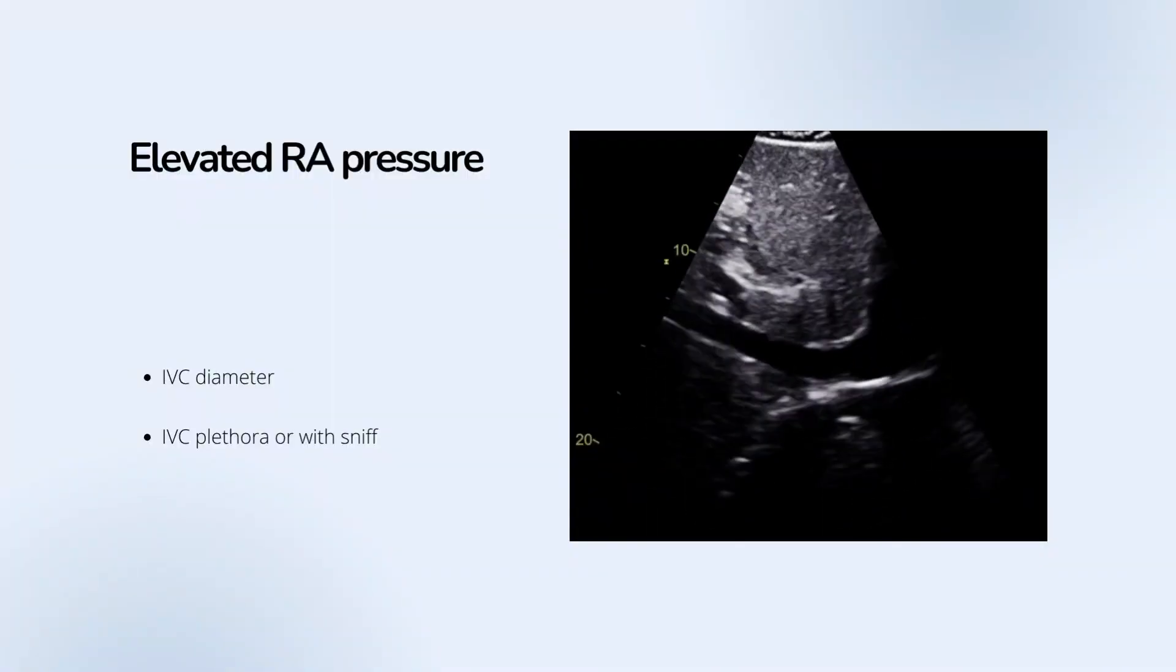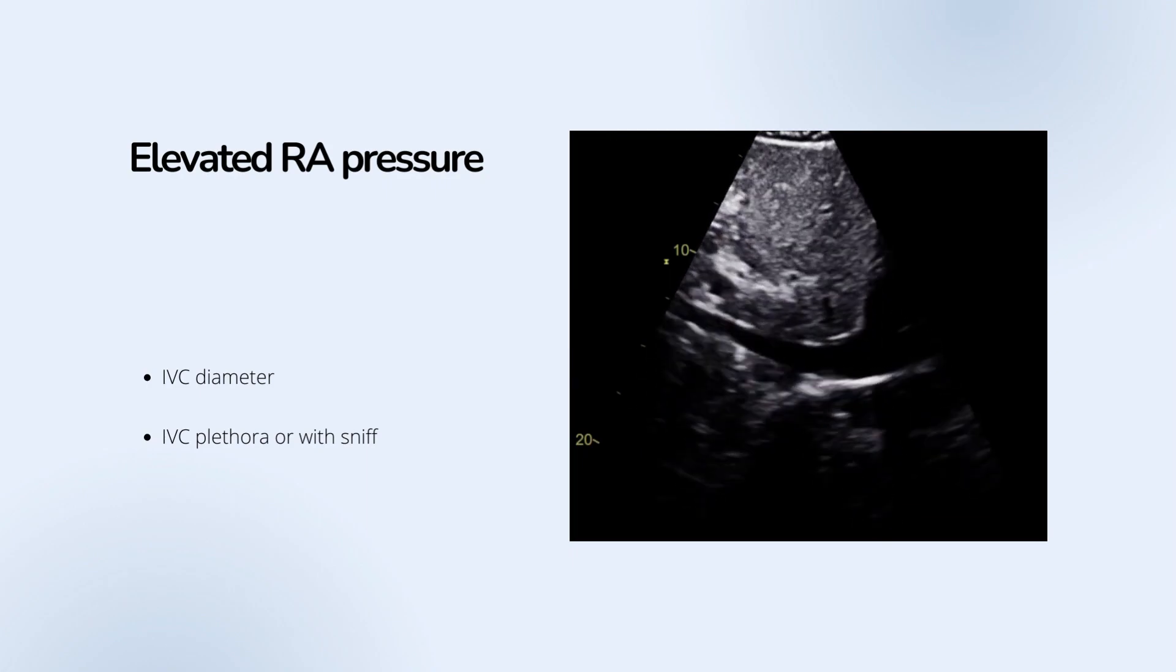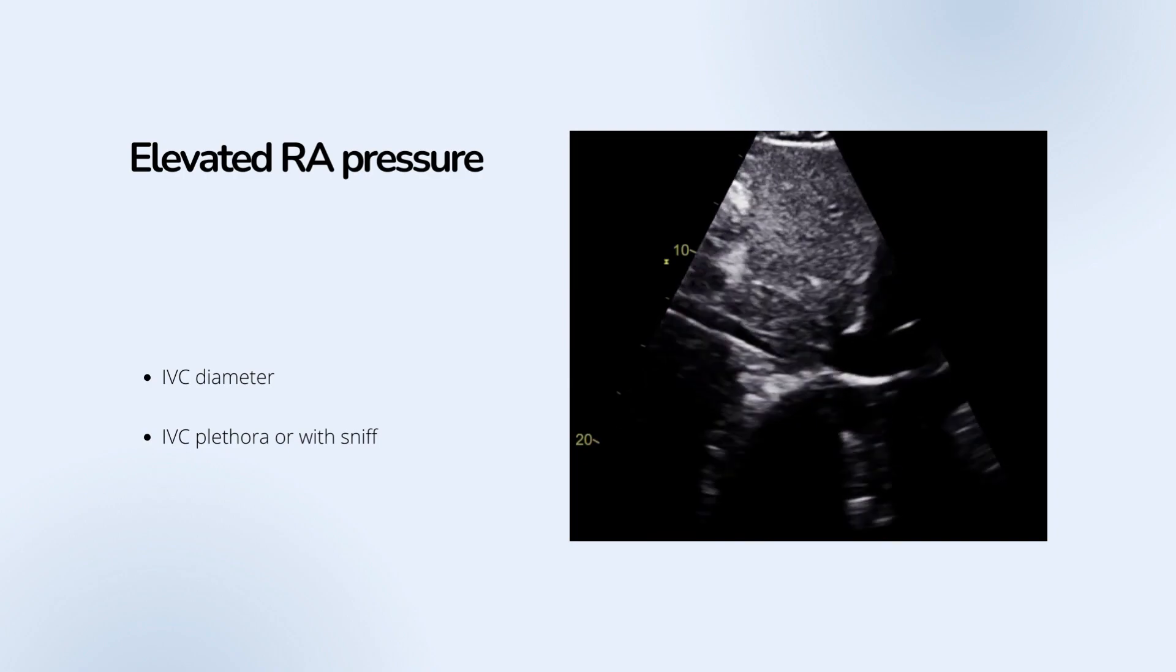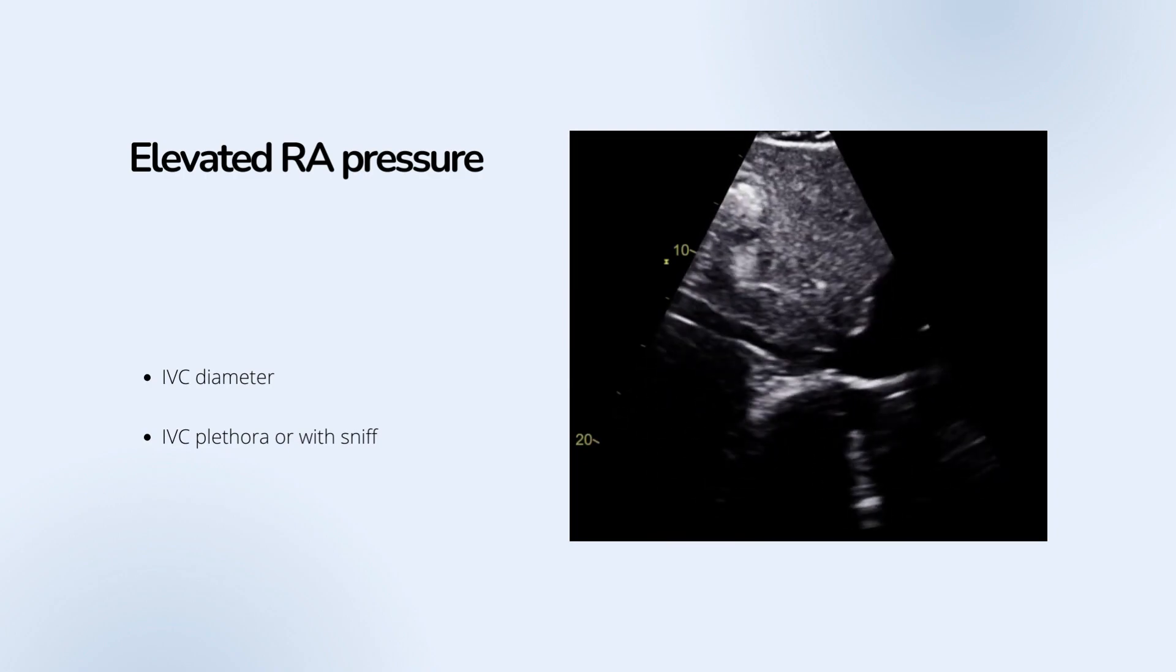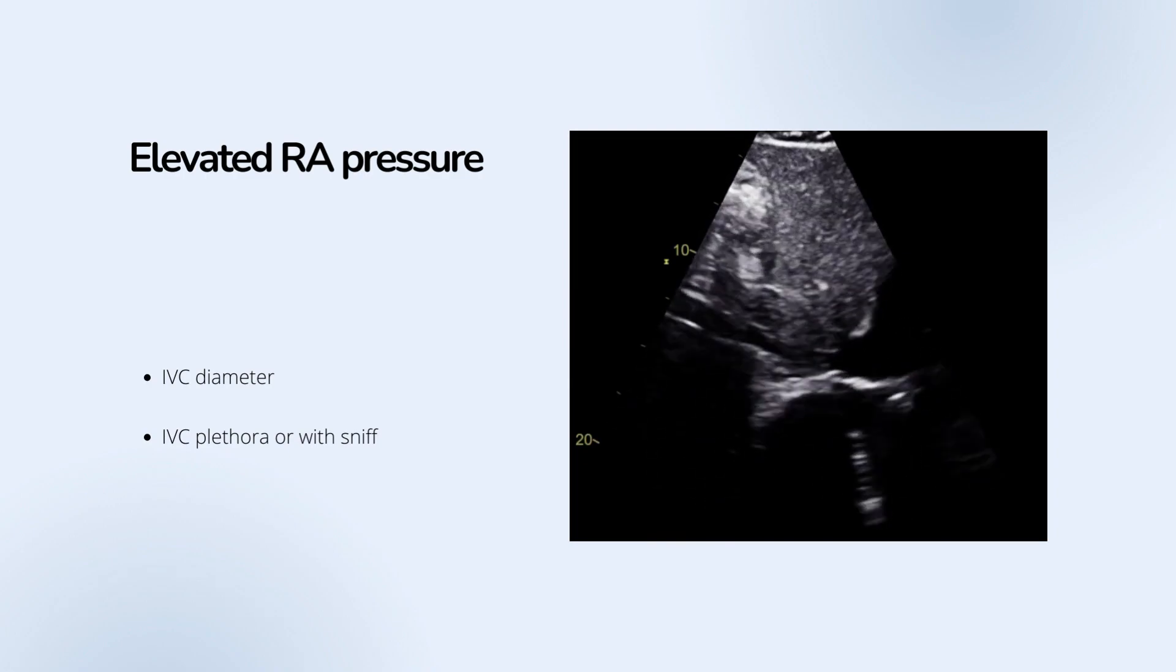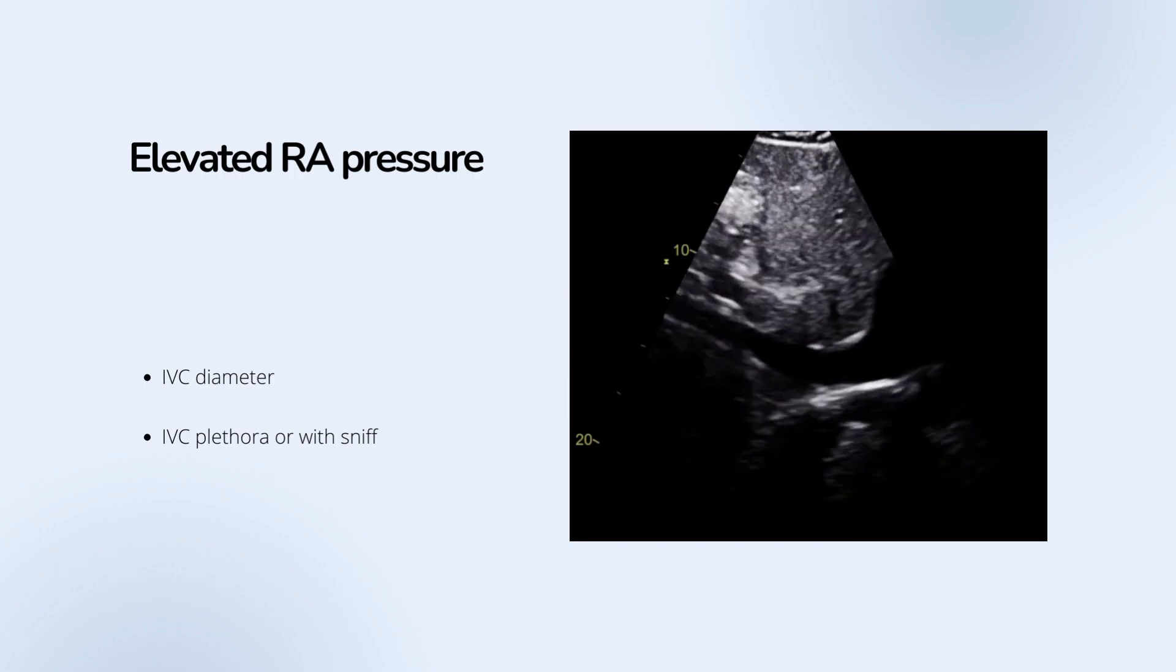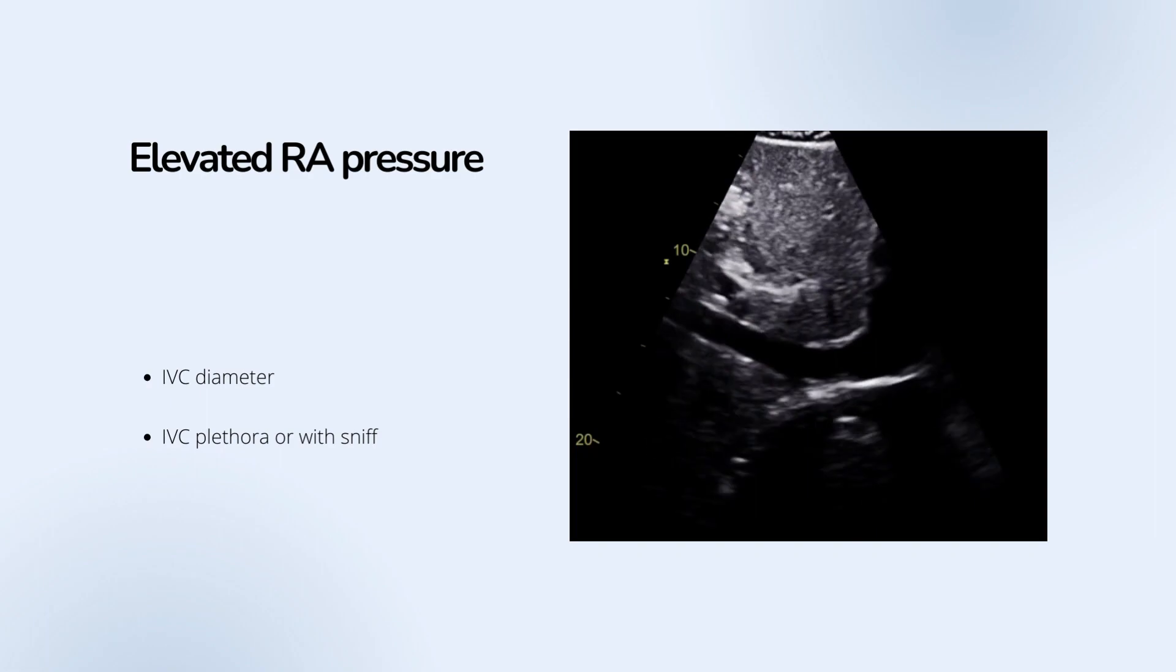The two main echocardiographic abnormalities suggesting an elevated right atrial pressure are IVC dilatation and IVC plethora. IVC plethora refers to inspiratory narrowing of IVC on normal quiet breathing, while sniff is breathing audibly through the nose.